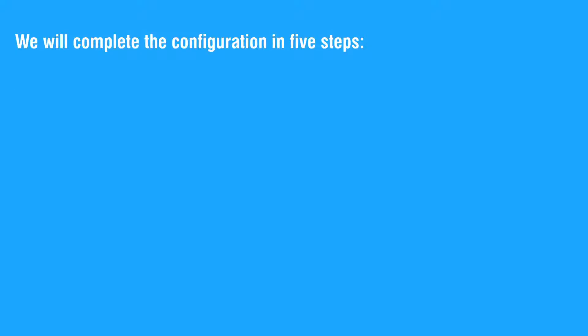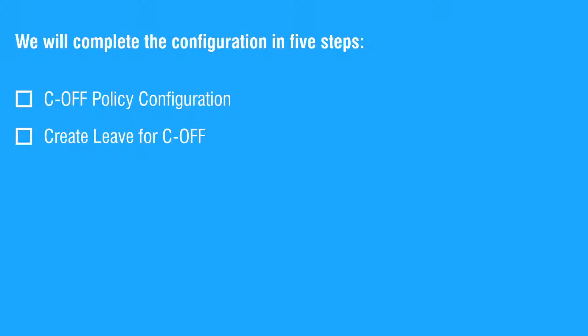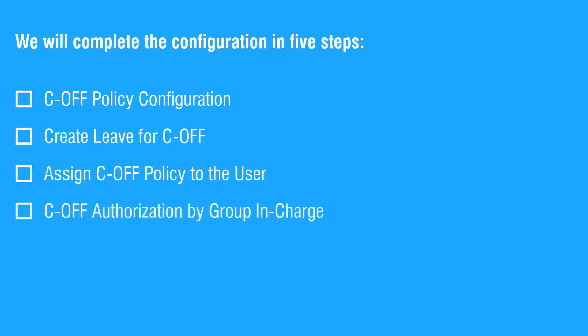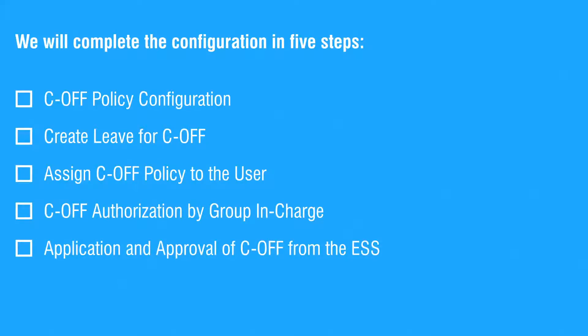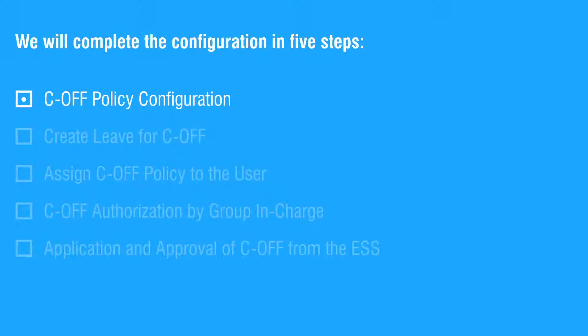Let us start with the configuration. We will complete the configuration in 5 steps: C-OFF policy configuration, create leave for C-OFF, assign C-OFF policy to the user, C-OFF authorization by group and charge, and application and approval of C-OFF from the ESS.